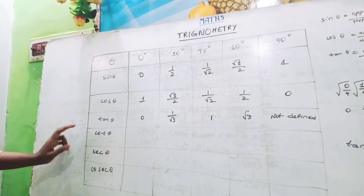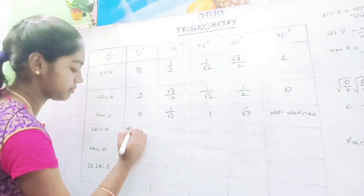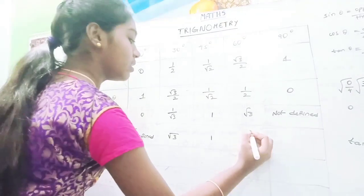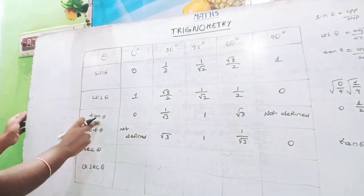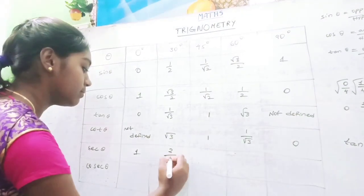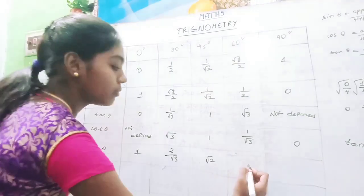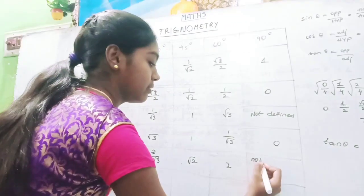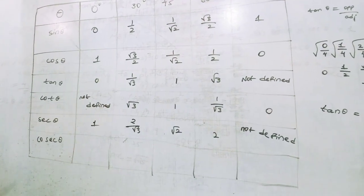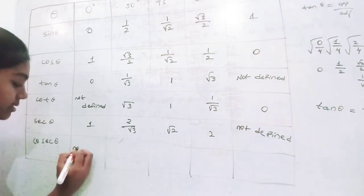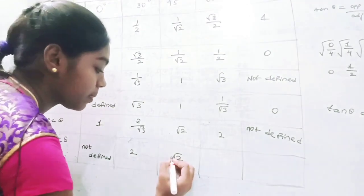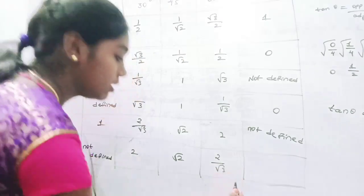As cot theta is reciprocal of tan theta, cot 0° is not defined, cot 30° = √3, cot 45° = 1, cot 60° = 1/√3, and cot 90° = 0. Sec theta is reciprocal of cos theta, so sec 0° = 1, sec 30° = 2/√3, sec 45° = √2, sec 60° = 2, and sec 90° is not defined. Cosec theta is reciprocal of sin theta, so cosec 0° is not defined, cosec 30° = 2, cosec 45° = √2, cosec 60° = 2/√3, and cosec 90° = 1.